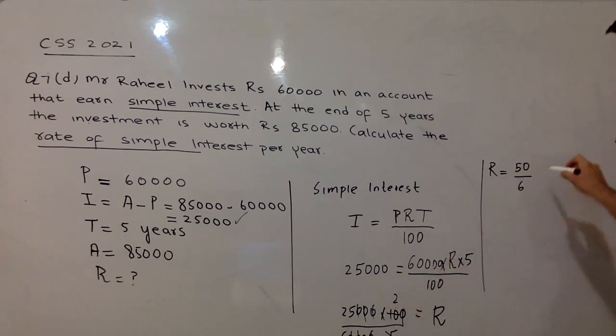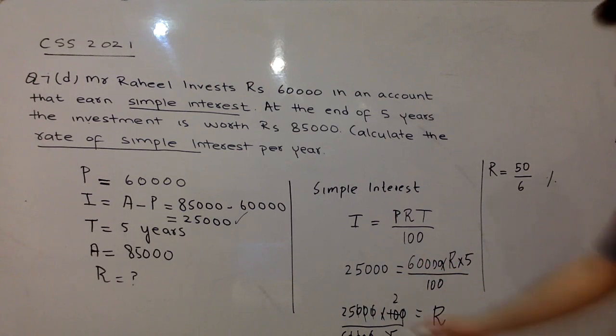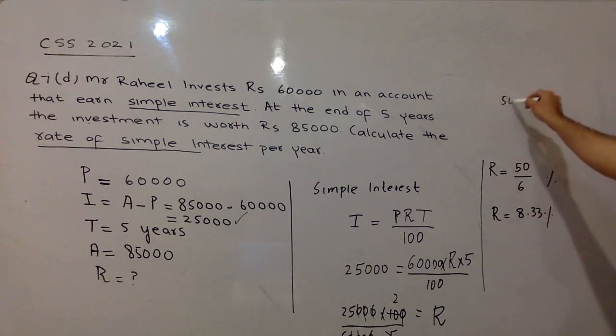So now the situation is 25 into 2 is 50 over 6. This percent is your rate of interest. After simplification, 25 into 2, 50 in the numerator, denominator is 6. And if you simplify, 50 over 6, that is almost 8.33%.